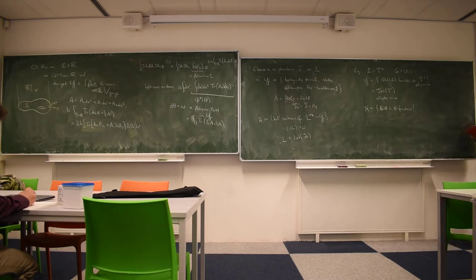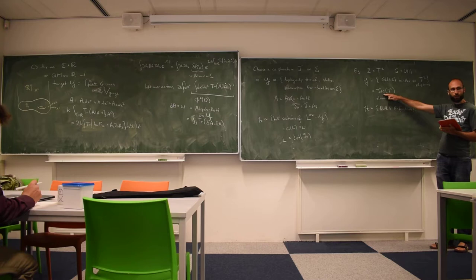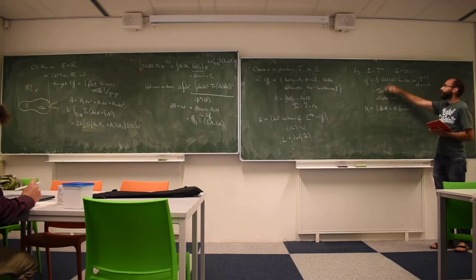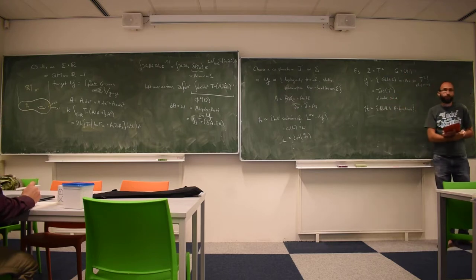The Hilbert space ends up containing level K theta functions. So in the case where sigma is T2 and the group is U(1), the story boils down to quantum mechanics whose target is the Jacobian.